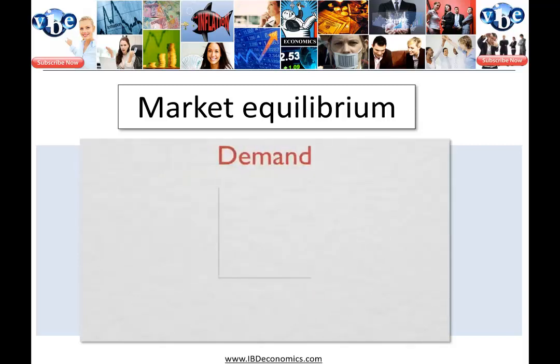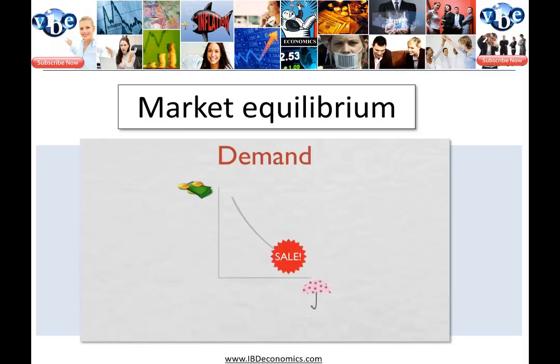Now on to demand. A demand curve is a relationship between the price of a certain good and the amount of that good buyers want to buy. Although there are exceptions, most demand curves slope downwards. Intuitively, you'll buy more of something if it's cheaper.